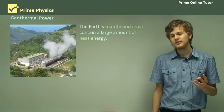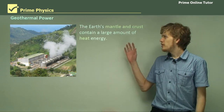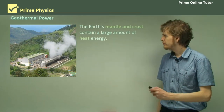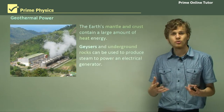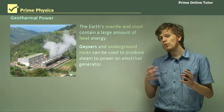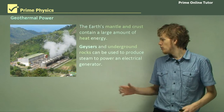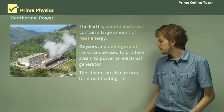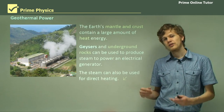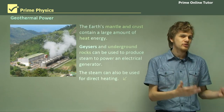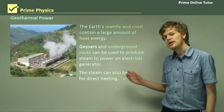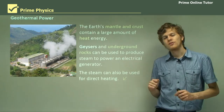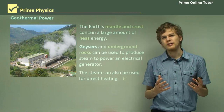Finally, we can use geothermal power as an energy source. The Earth's mantle and crust contain a lot of heat energy — that's why the core of the Earth is molten. If we have a geyser or hot rocks underground, we can use either one to heat up water and produce steam, or simply use the steam itself to turn a generator. The steam can also be used for direct heating instead of using it to produce electricity. Geothermal energy is not yet widely used, but in the future it may provide a very good way of gathering energy.